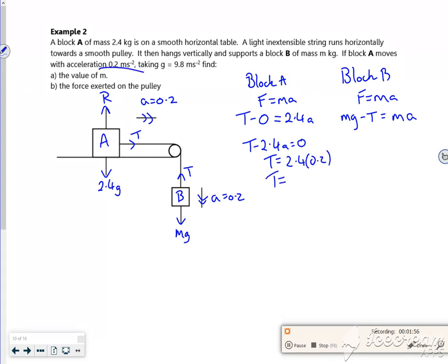So that gives me 0.48 Newtons. I've got 9.8M minus the tension of 0.48 equals 0.2M.